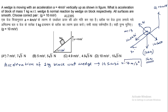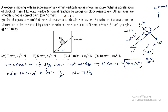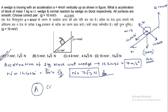यह पहला answer आ गया। Second, normal reaction force acting on the 1 kg block due to wedge = 14 cos30° = 14 × (√3/2) = 7√3 N। तो normal reaction force N = 7√3 N। तो 7 और 7√3 — we can see that option A is the correct option for this problem।